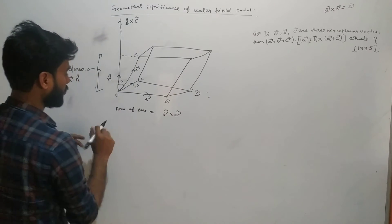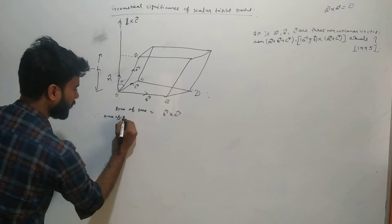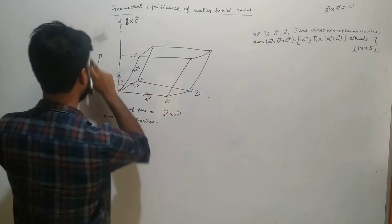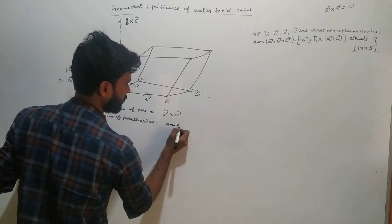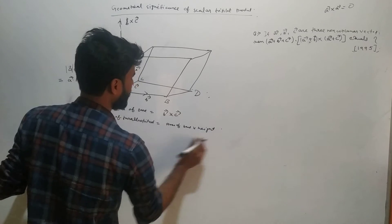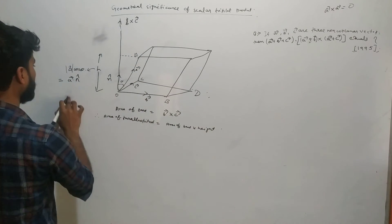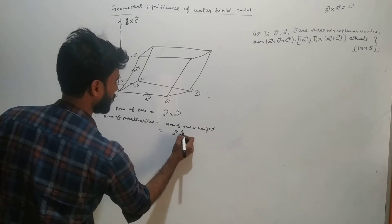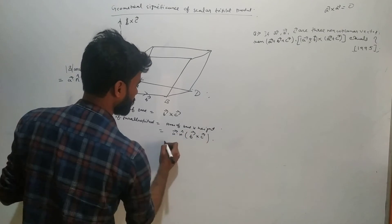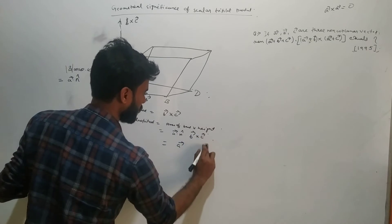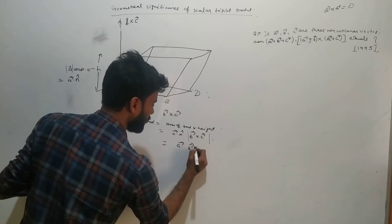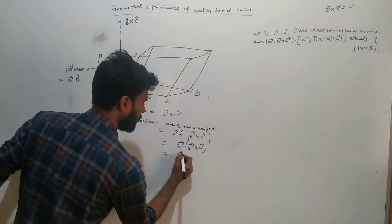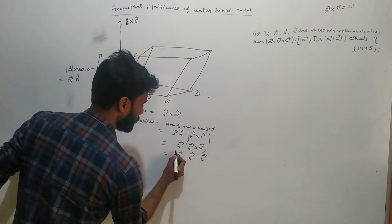So the volume of the parallelepiped is equal to area of base times height. The area of base here is |b cross c| and the height is a cosθ. So this can be written as a dot (b cross c), which is the scalar triple product a, b, c — also called the box product [a, b, c].